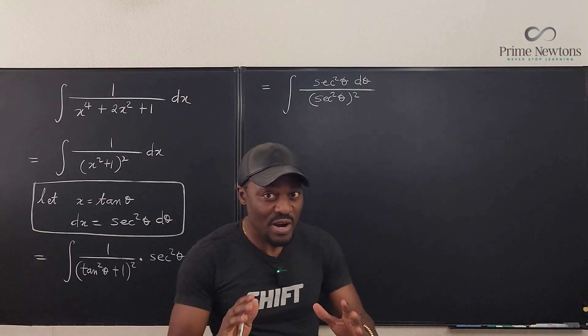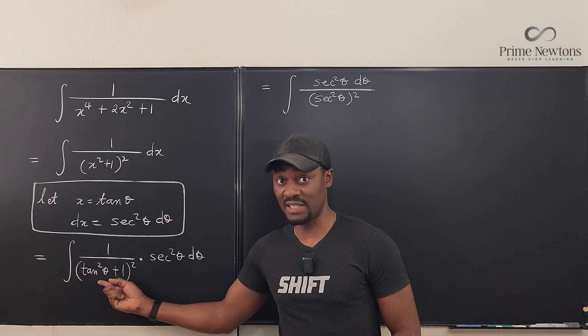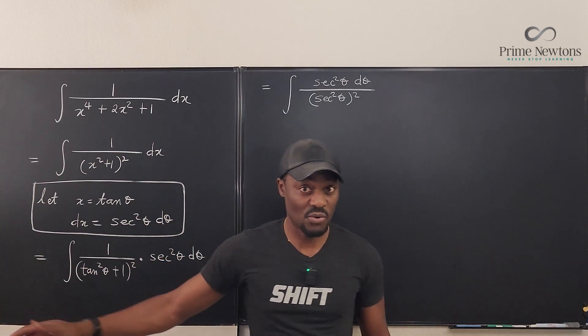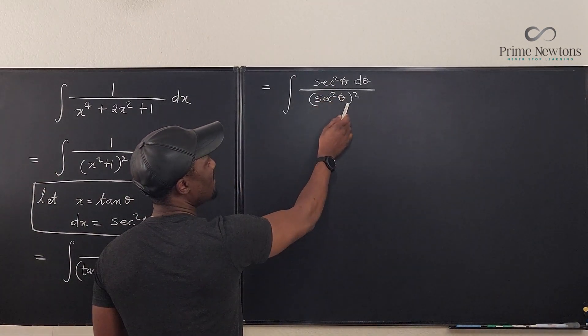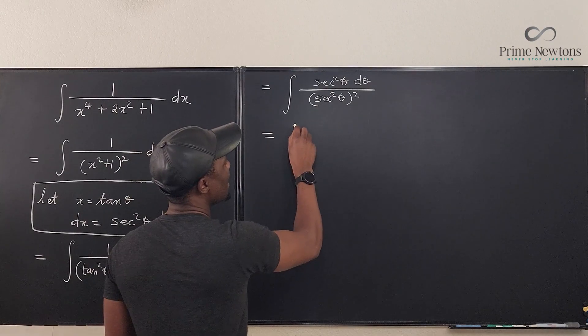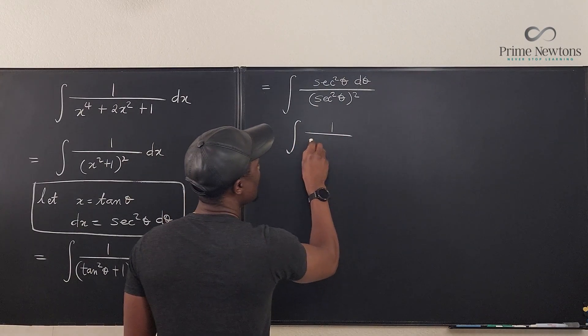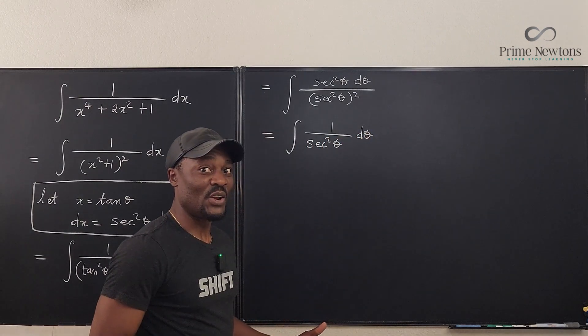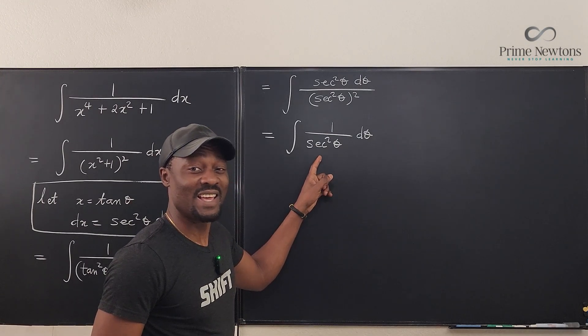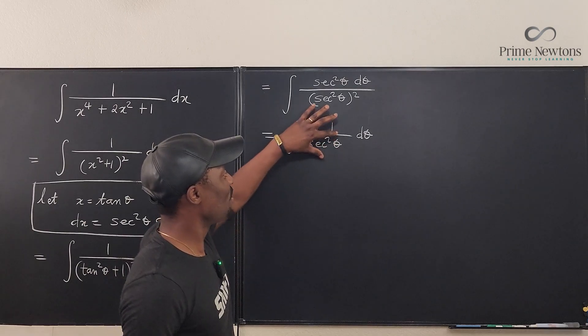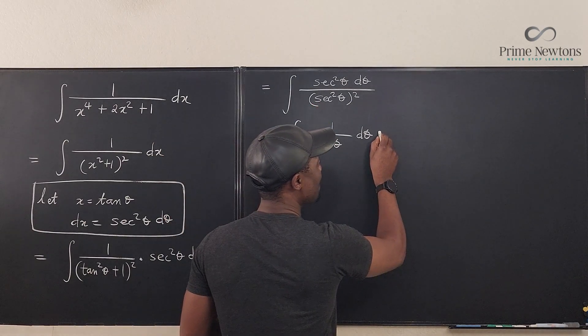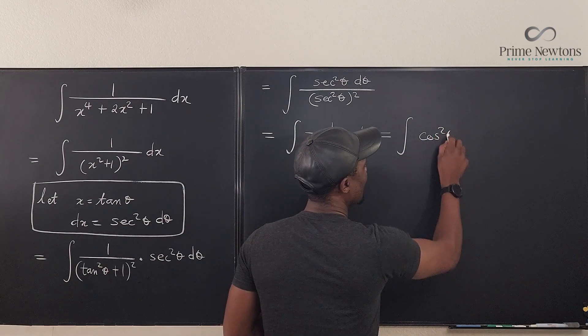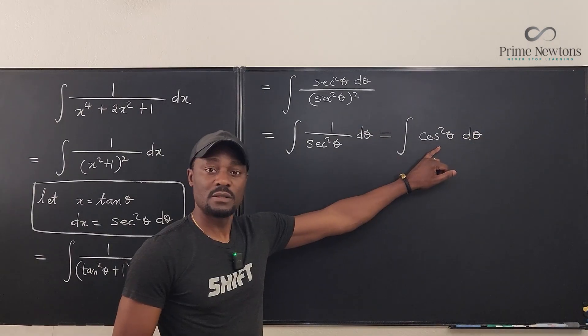So you see where integration becomes tough is if you don't recognize this identity, and as a calculus student you have to know these identities from your trig. Okay, so now we're going to cancel. We've got two of it here, you got one on top, so this easily is the integral of 1 over sec^2 θ dθ. This makes your life a lot easier because we know what sec^2 θ is. It is 1 over cos θ, so the reciprocal of sec^2 θ is the integral of cos^2 θ dθ.